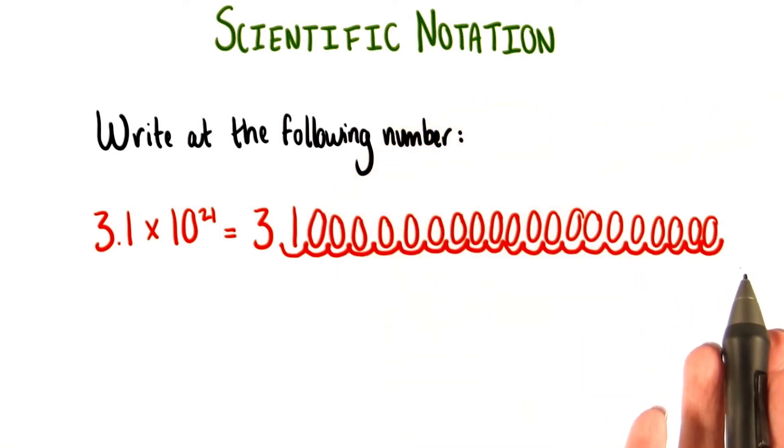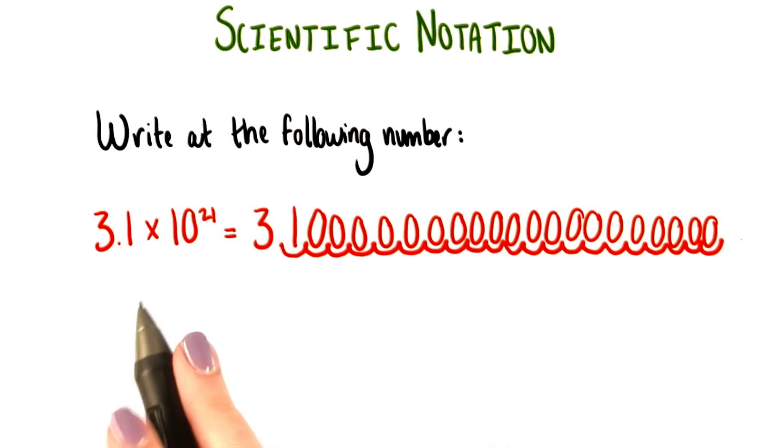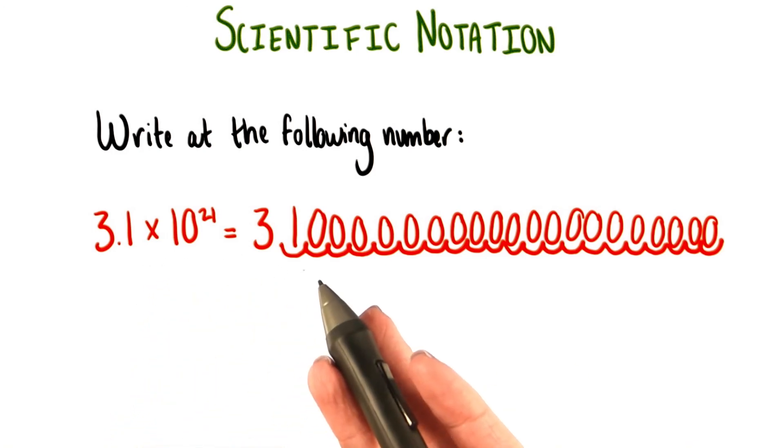There we go. This is our final number. We've moved the decimal point all the way out here. Turns out 3.1 times 10 to the 21 is a pretty big number.